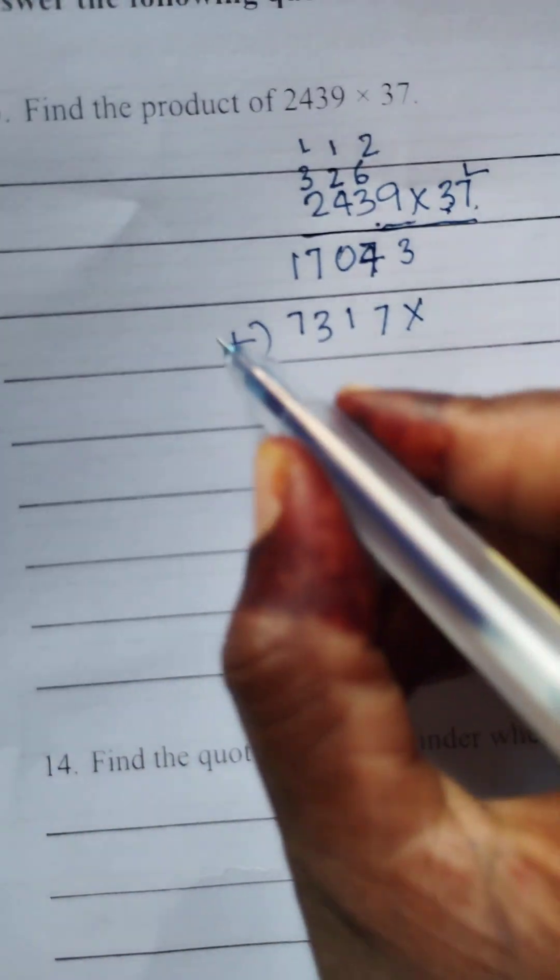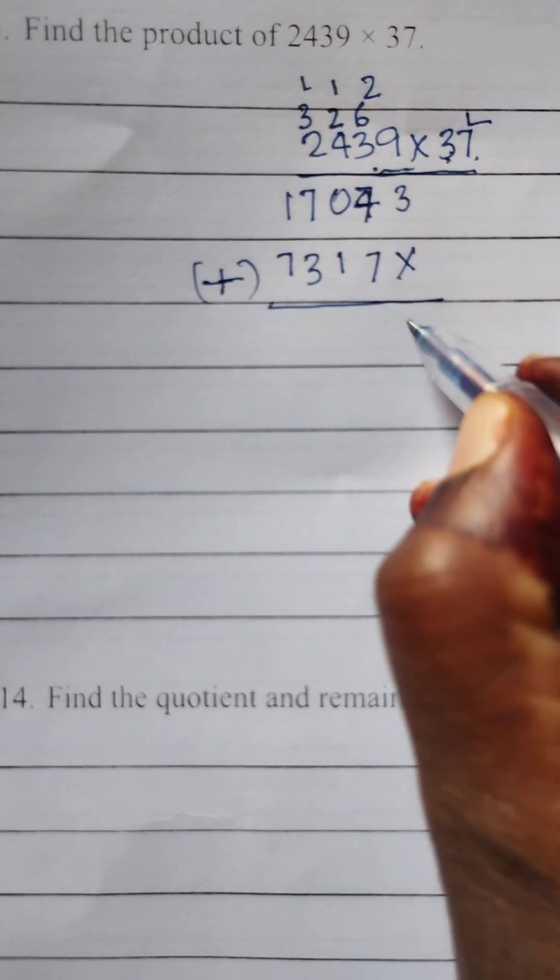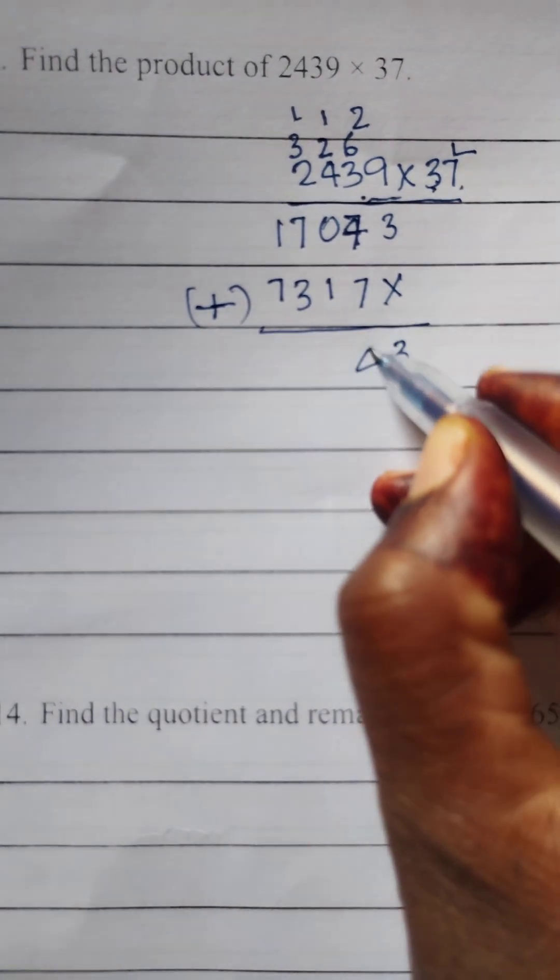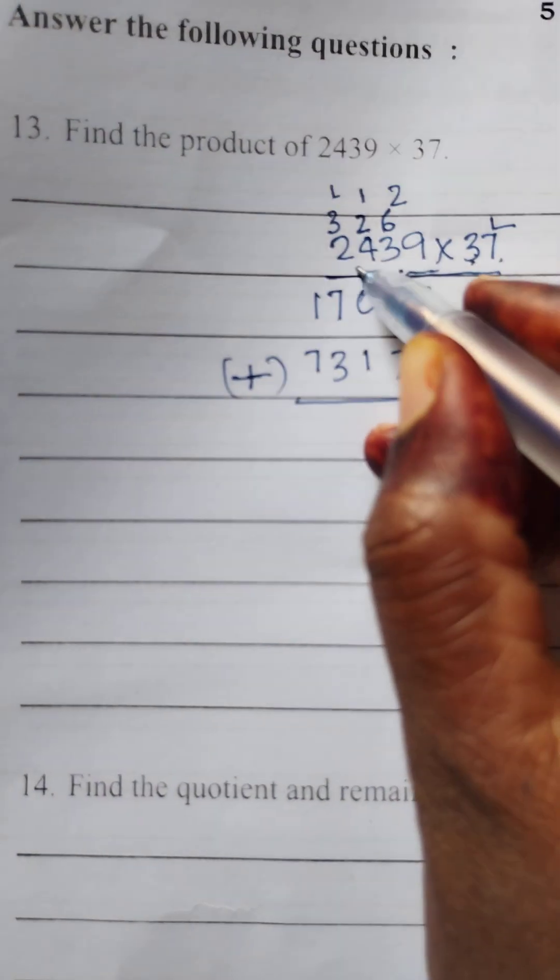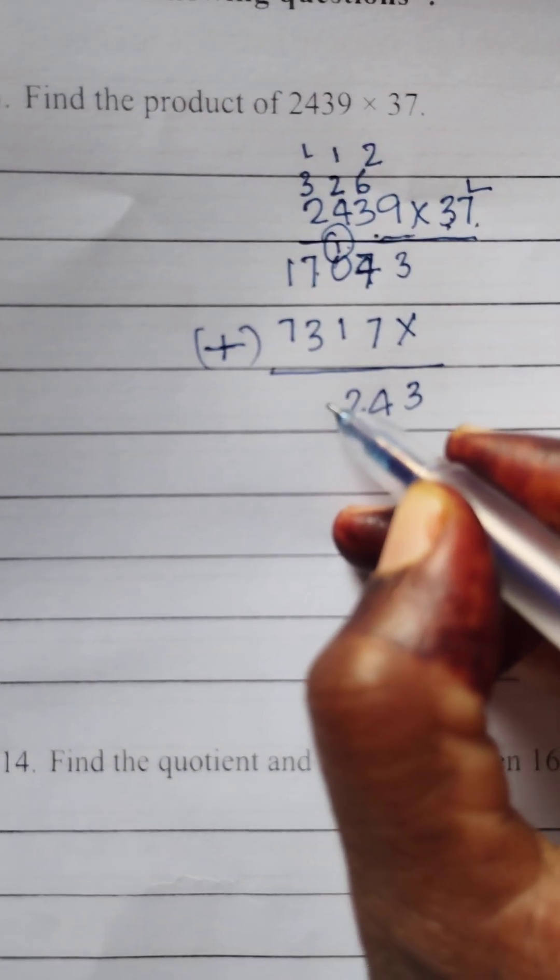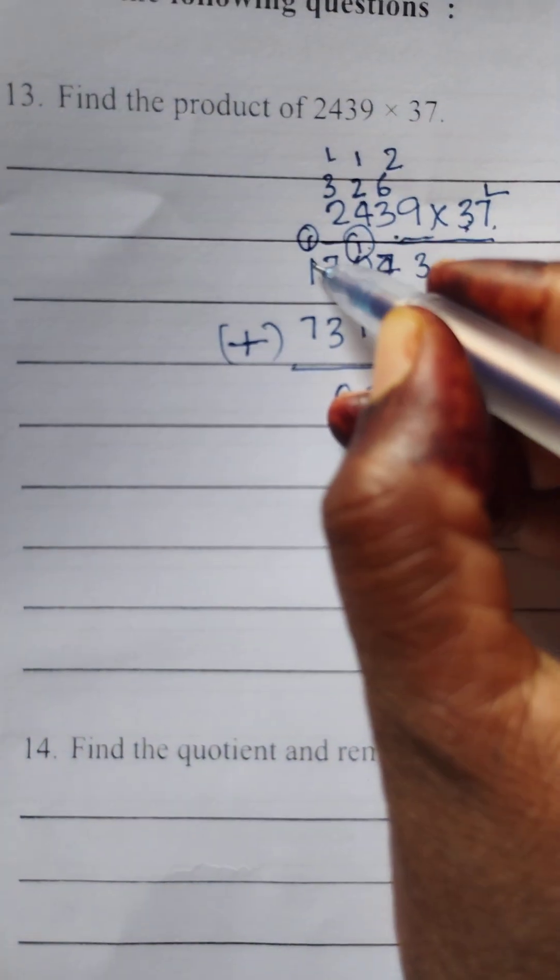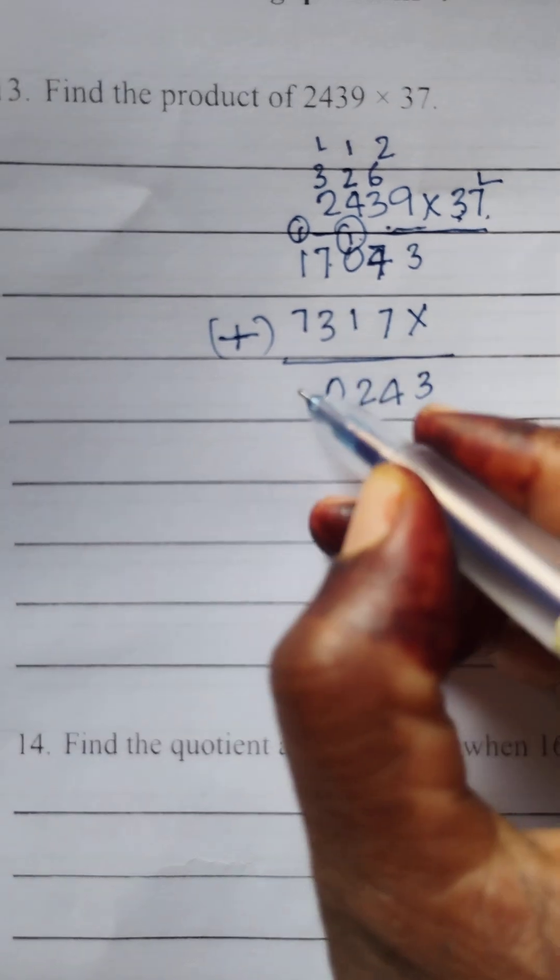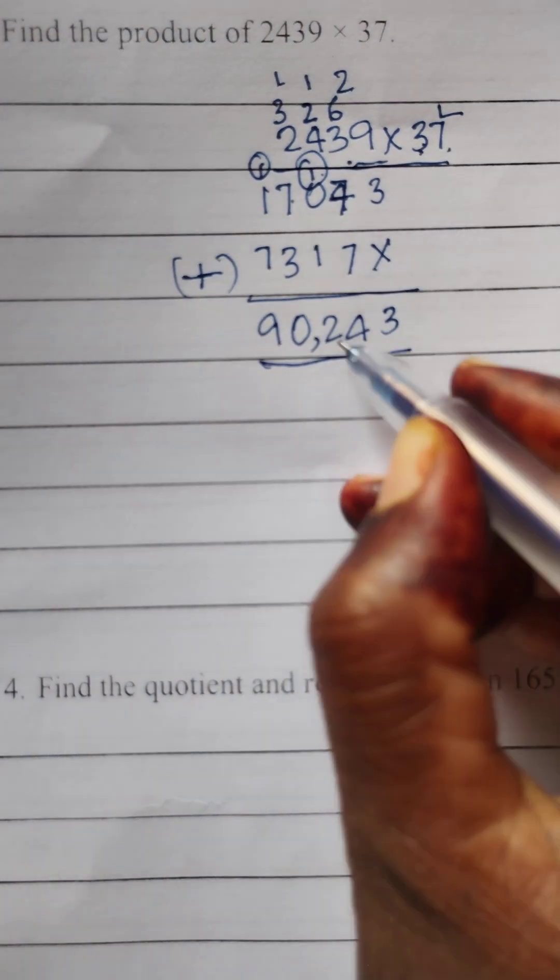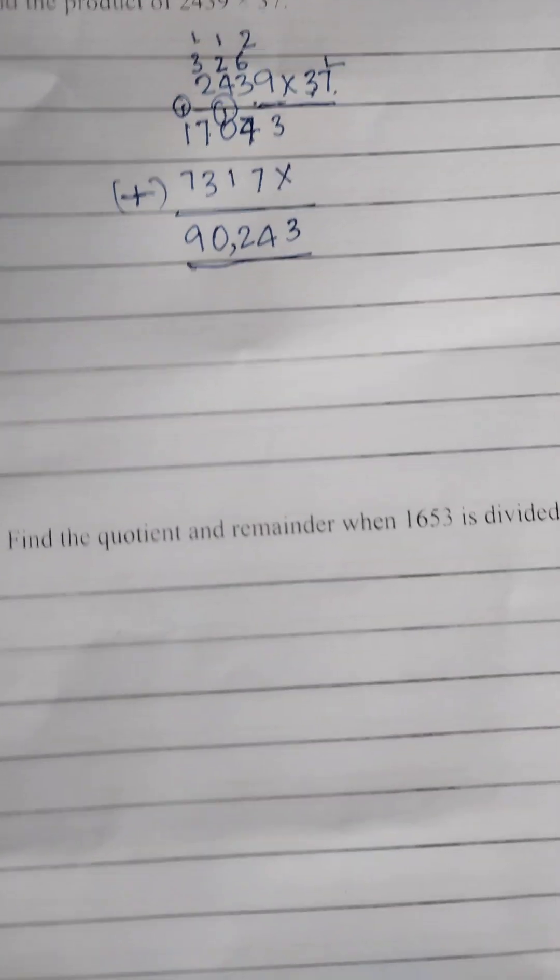Add now. 3. 7 plus 7, 14. 1 goes to carry. 1 plus 1, 2. 7 plus 3, 10. 1 goes to carry. 1 plus 1, 2. 2 plus 7, 9. So answer is 90,243 is the answer.